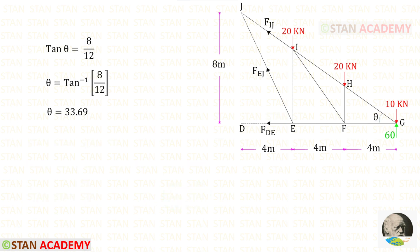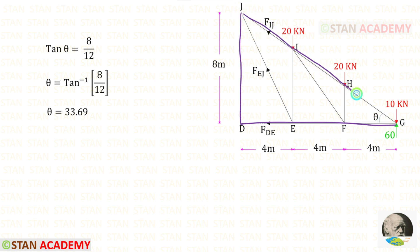We need to find this angle. Let us keep the angle as theta and take this triangle. In this triangle, using the tan formula, tan theta will be equal to 8 upon 12. For theta, we will get 33.69°.